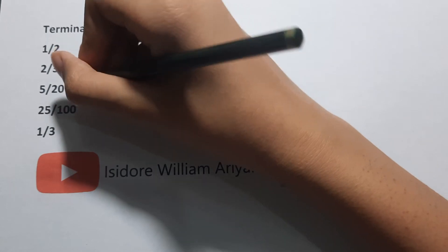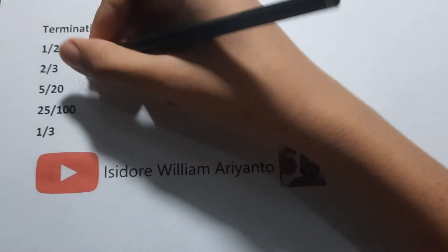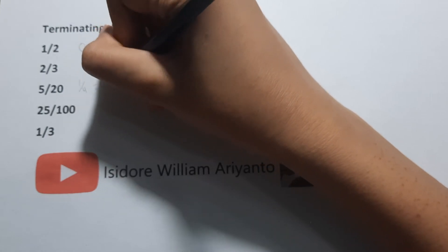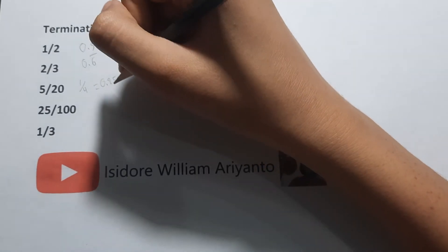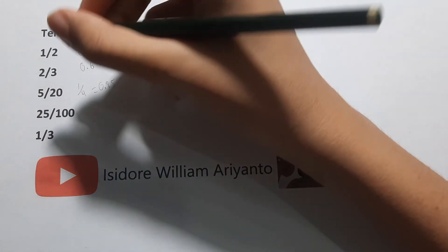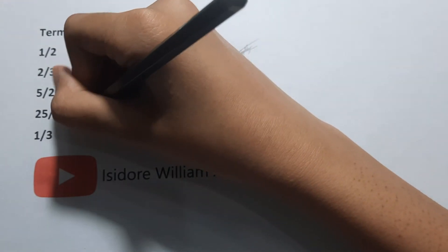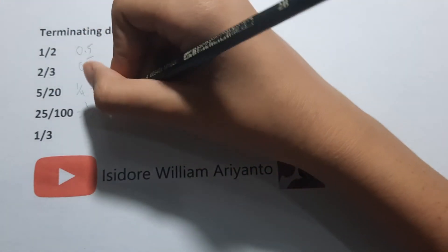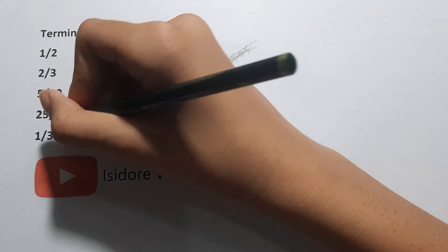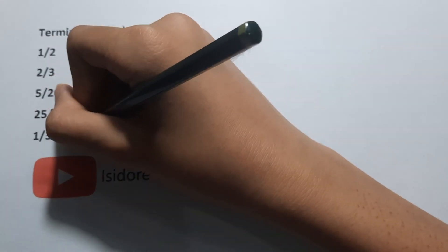5 divided by 20 equals 1 over 4, which is 0.25 — not a recurring decimal, a terminating one. 25 over 100 is also 1 over 4, equals 0.25. And 1 over 3 is just 0.3 bar.